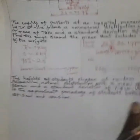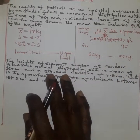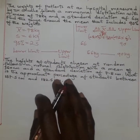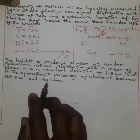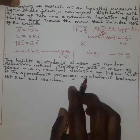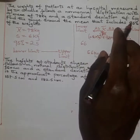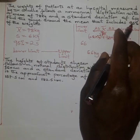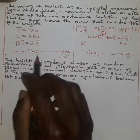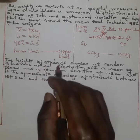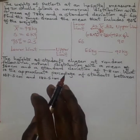Now I want us to look at another example. Previously we were given the area percentage and asked to find the range. What about now if we are given the range and are supposed to approximate the area?